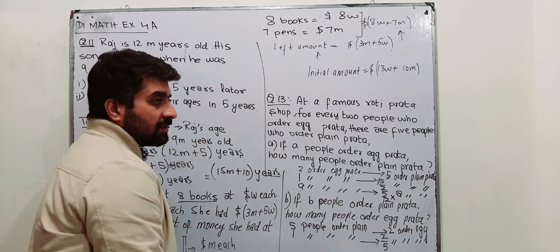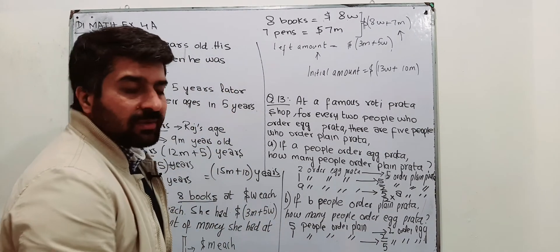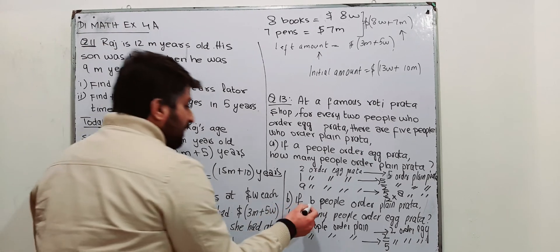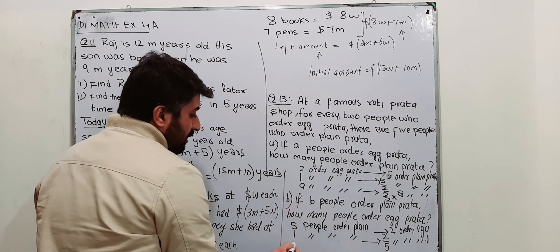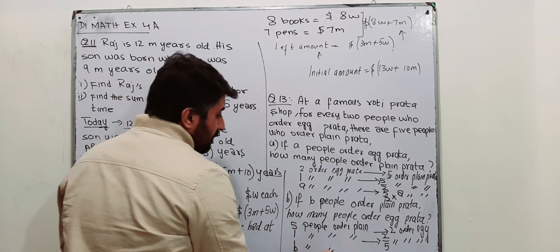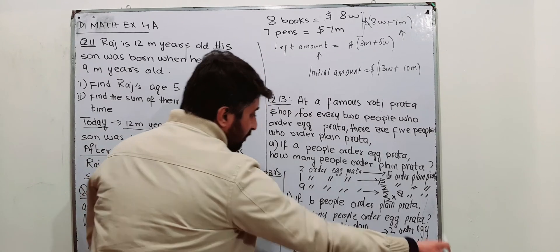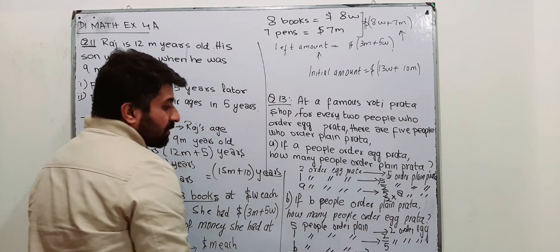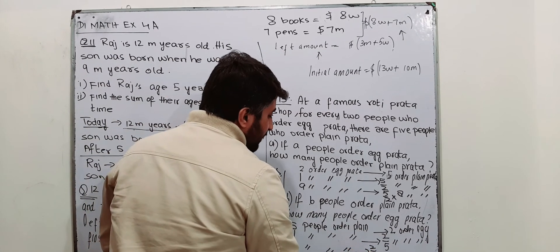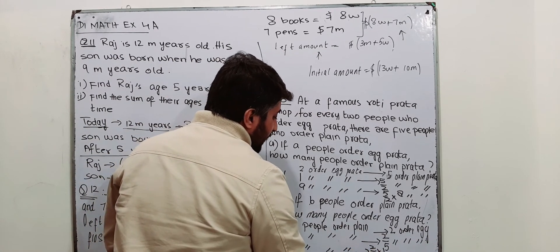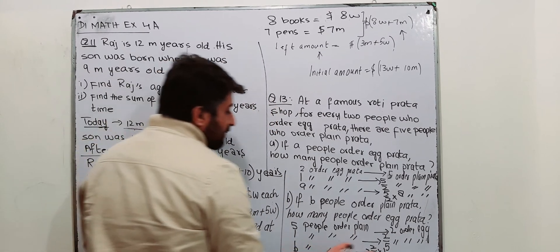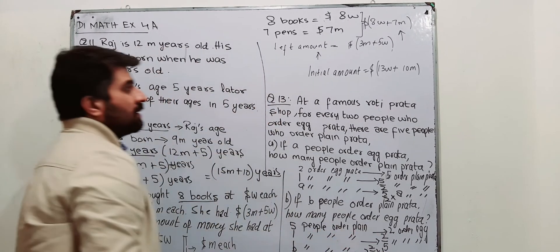This is the unitary method. Now if b people order plain pratha, then how many would order egg pratha? That is quite simple: two over five multiplied by b. Simply multiply by b. This is your answer: 2b/5.